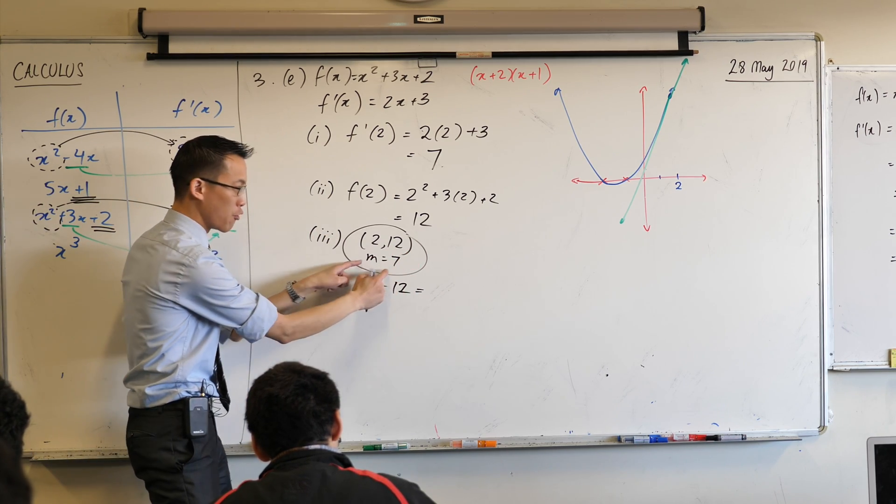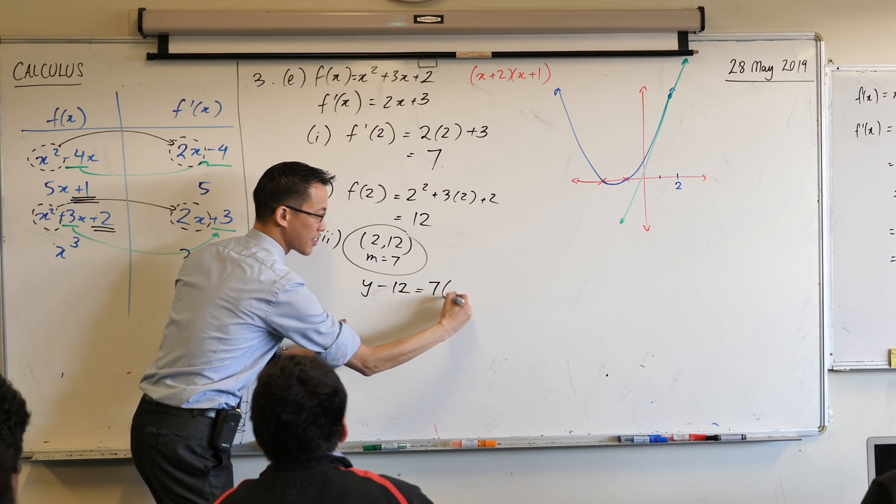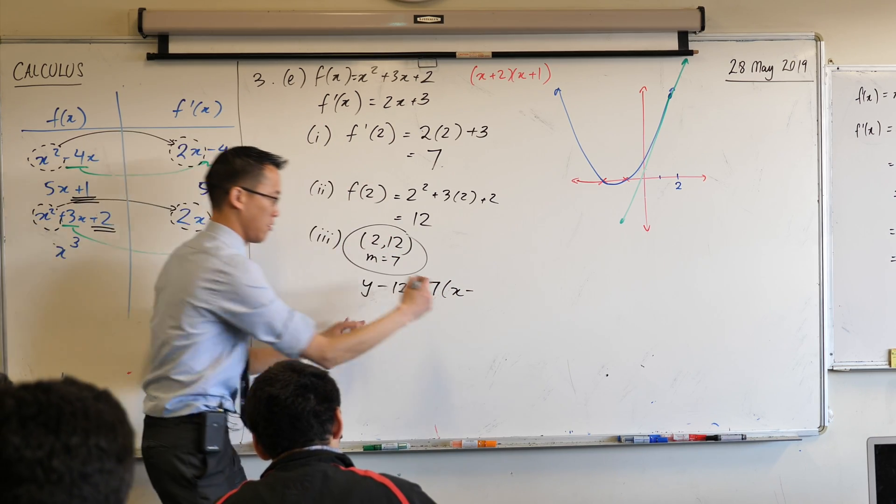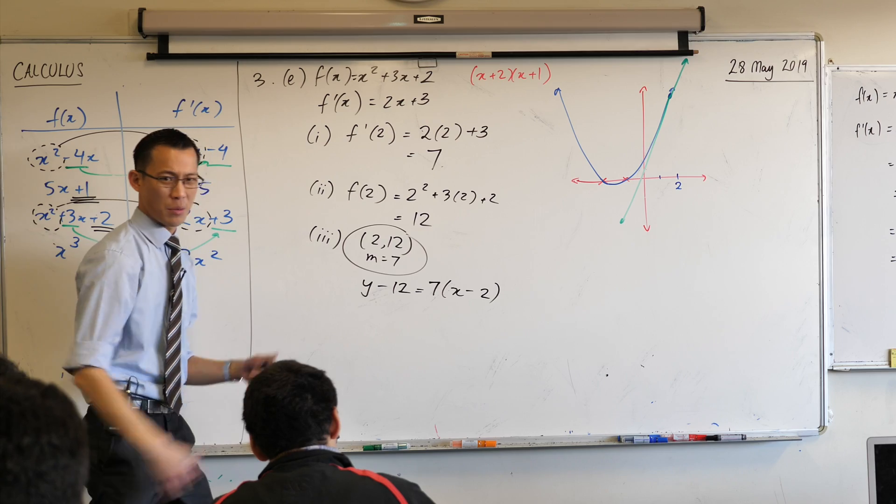M x minus... M, which is the gradient. 7 outside of x minus x1, which in this case is 2. Like so. Can we tidy this up a little bit? Let's tidy this up.